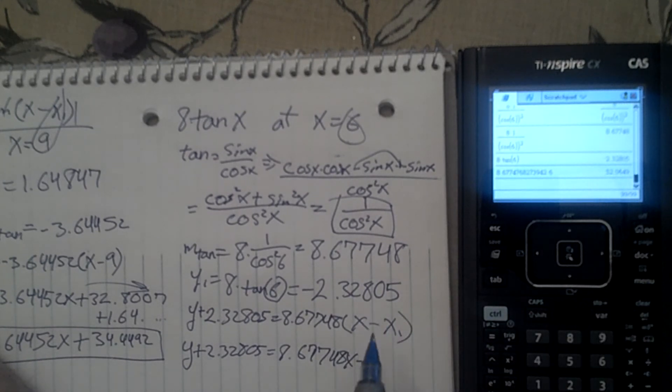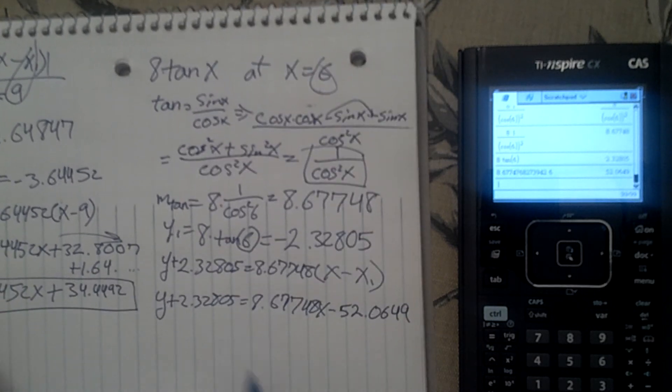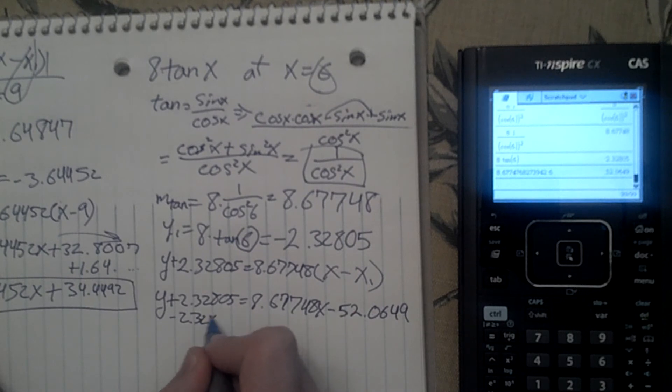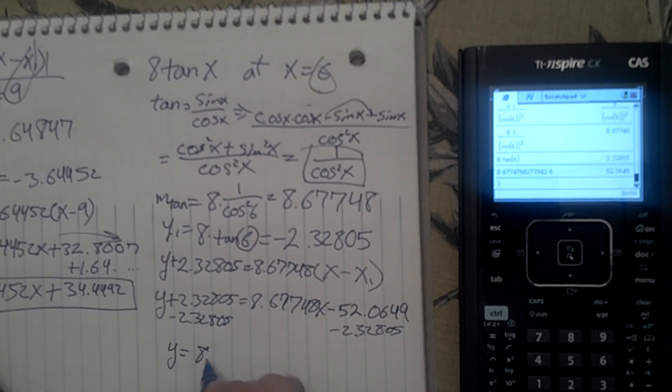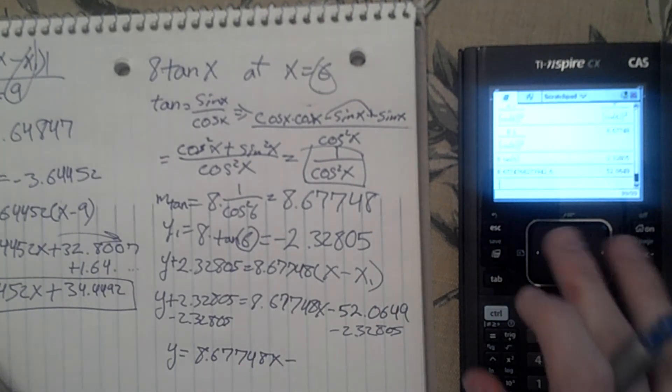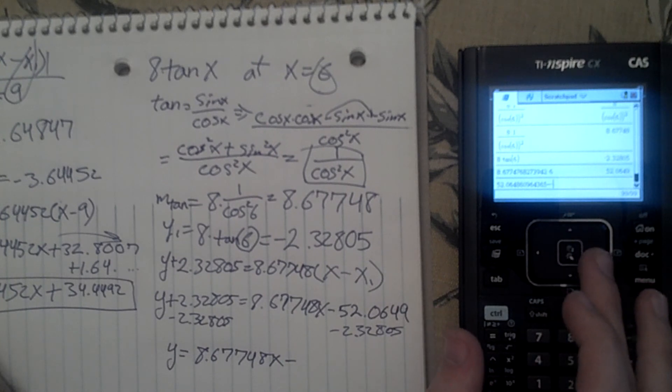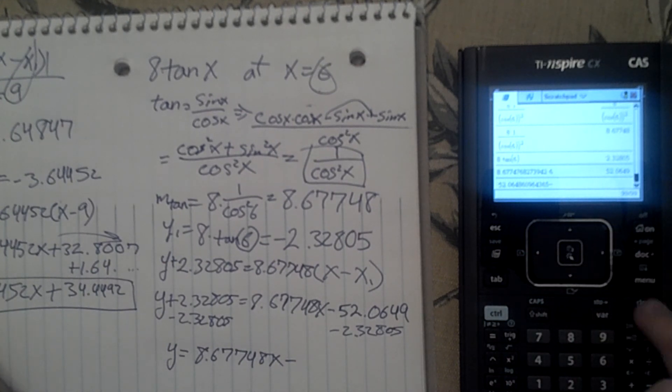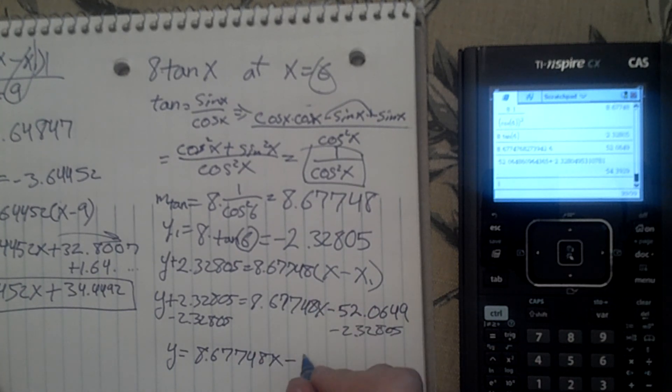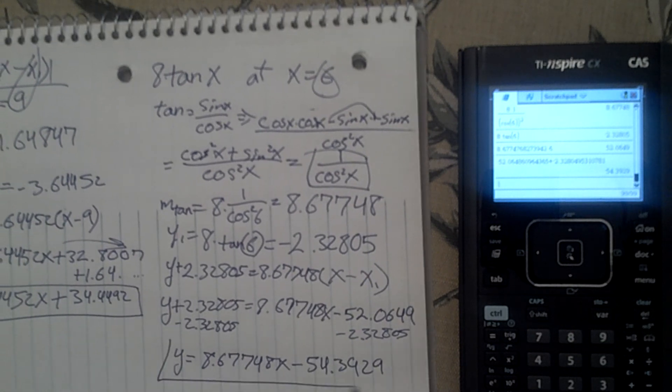We'll put this in our calculator. So we have 8.67748x minus, and we want to calculate all this, so we have negative 52 all that minus 2.32, which gives us 54.3929, and that is our number.